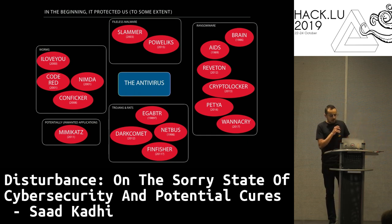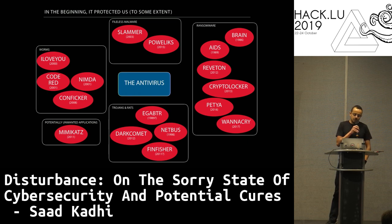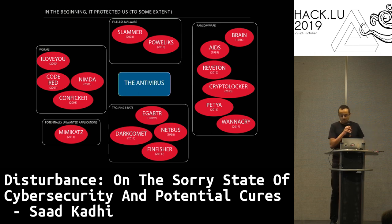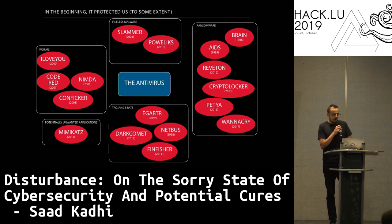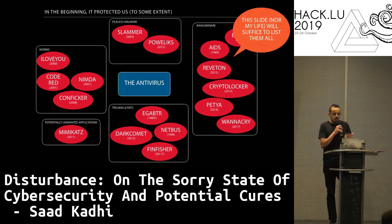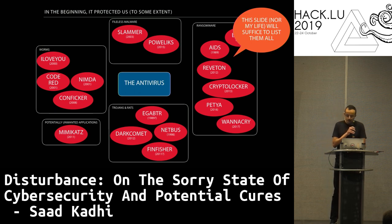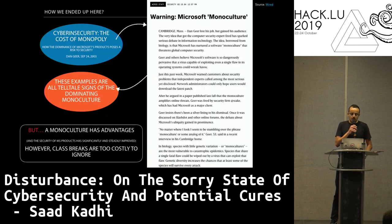Trojans and RATs — the first Trojan or RAT I can think of is EJBTR, sometime in 1989. Anyway, you get the idea. This slide alone would require a normal lifetime to list them all. So, how did we end up here?